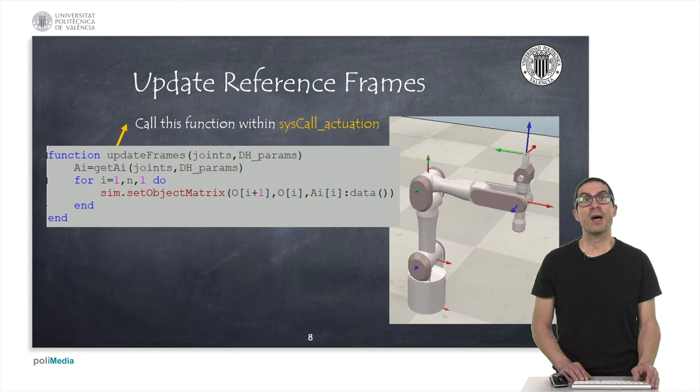Finally, we have created another function to set the position of reference frames. To do this, we will set reference frames based on the relative position with respect to the previous reference frame. We need to provide the data, which is provided by the data function, of the specific transformation matrix, and using this data, we will set the reference frames using the setObjectMatrix function.